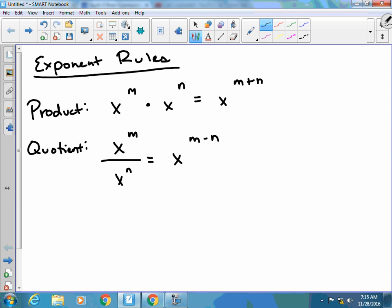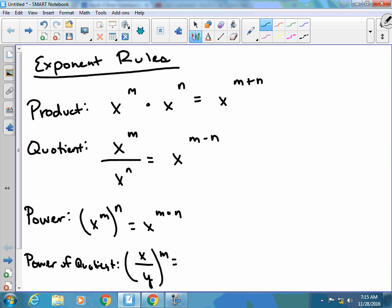If I've got a power, so if I have x to the m to the power of n, this time I'm actually going to multiply. If it's in a quotient, so this is power of a quotient, it's the same thing. It goes to both, the m goes to the x and the y.